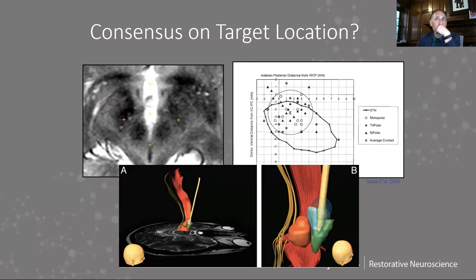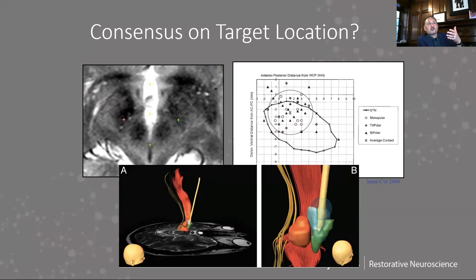Cameron McIntyre is an engineer who has thought a lot about modeling these circuits and how DBS intervenes in them. He recently came up with a demonstration using a Microsoft HoloLens where he shows all of the DTI fibers in real time, and then has a virtual electrode that you can move around the STN in three-dimensional space. You can see that even subtle movements often change the pattern of activation pretty dramatically.